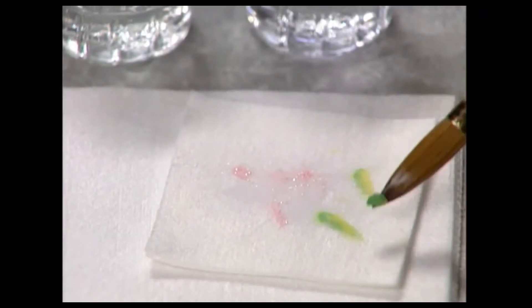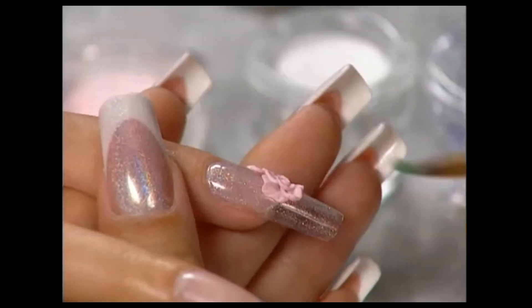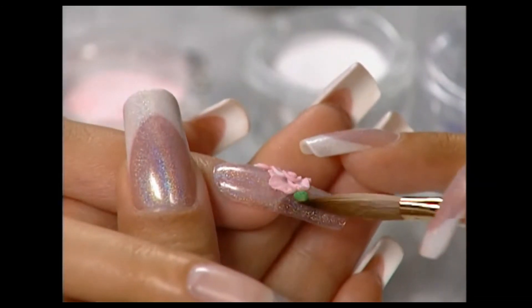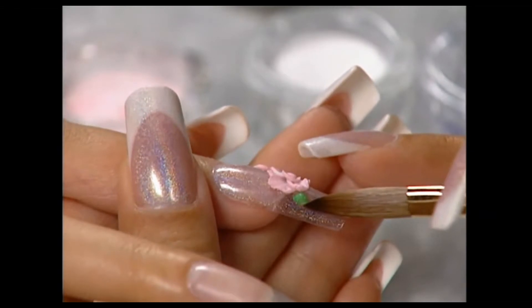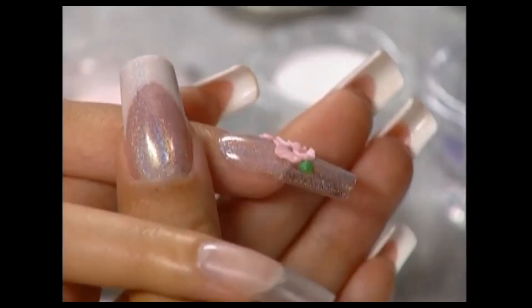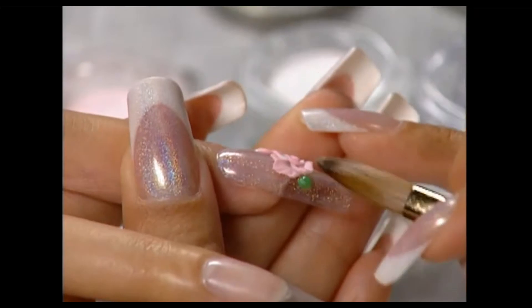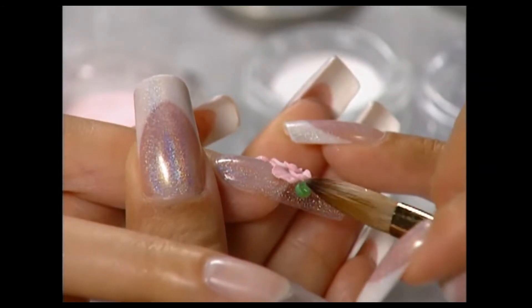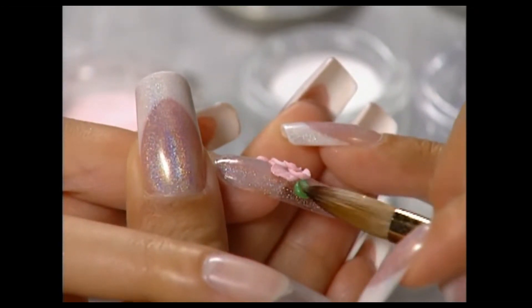Place the bead on an Expert Touch nail wipe to remove excess liquid. Now you can pick up the bead and place it on the nail. Once the bead is in position, press and mold it with the brush to shape the leaves in the design.